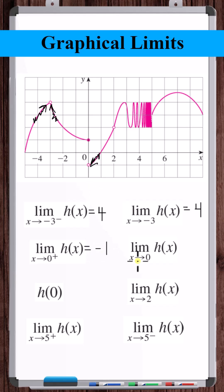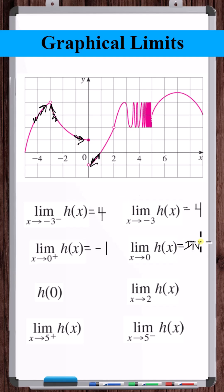The limit as x approaches 0 in general: from the right it's approaching negative 1, and from the left it's approaching 1. So this does not exist. H of 0, indicated by a closed circle, is 1.